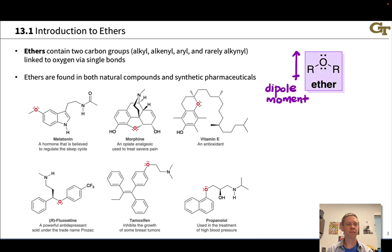And they're really ubiquitous in organic compounds. All the structures you see here, melatonin, morphine, vitamin E, fluoxetine, tamoxifen, and propranolol, all contain ethers. And generally, these are not very reactive. Ethers tend to be a kind of structural unit, often linking two fragments together with a lot of carbon-carbon bonds. And these typically do not break apart except under very vigorous conditions.